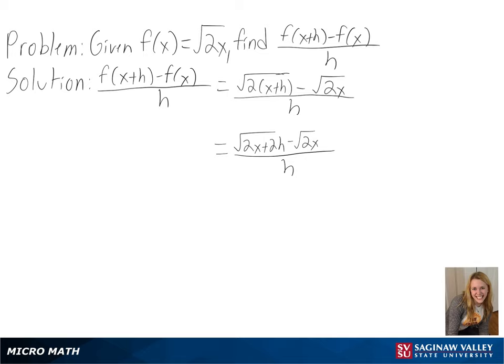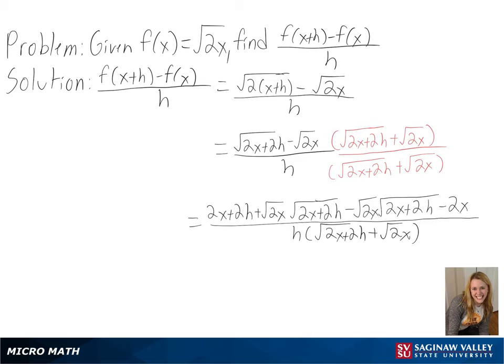Next, we can multiply by the conjugate of the radical, which will be our same equation but with a plus sign. And after multiplying, we can see that this will allow us to cancel out our radicals and subtract our similar terms.